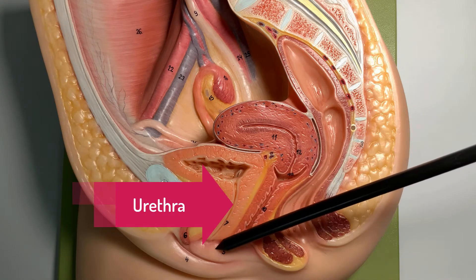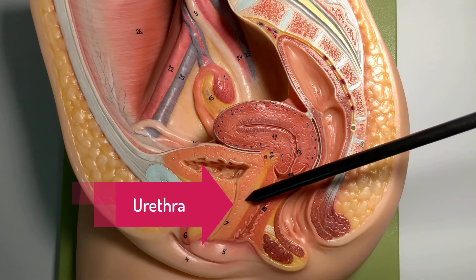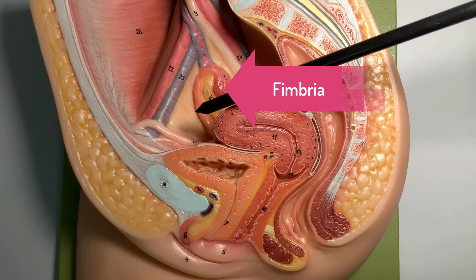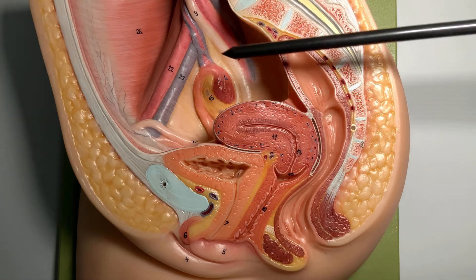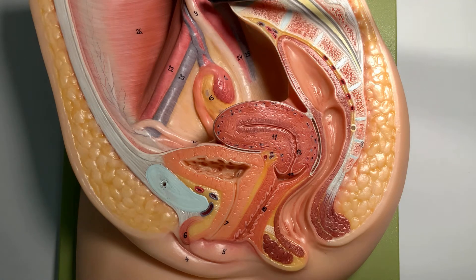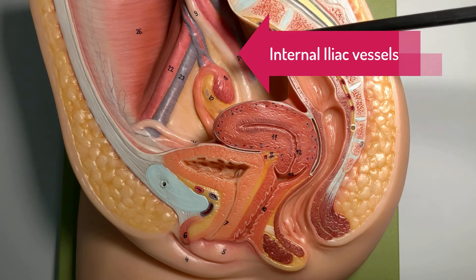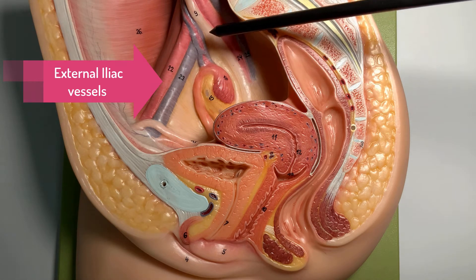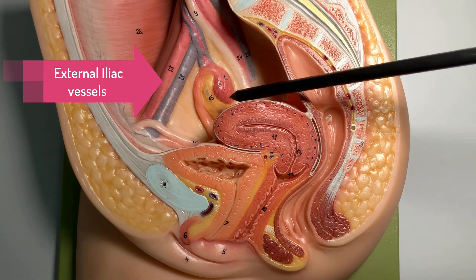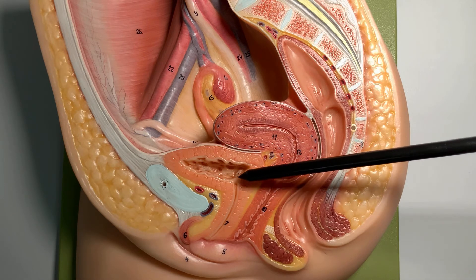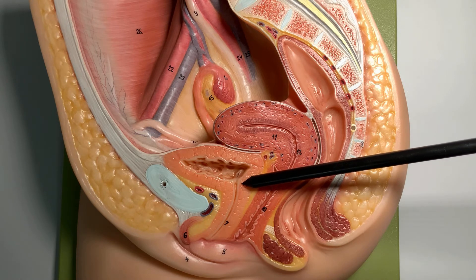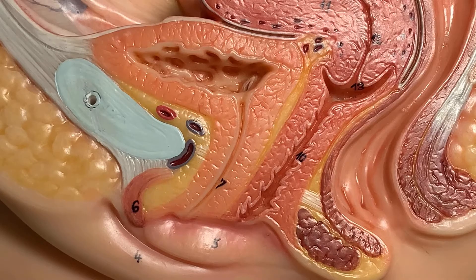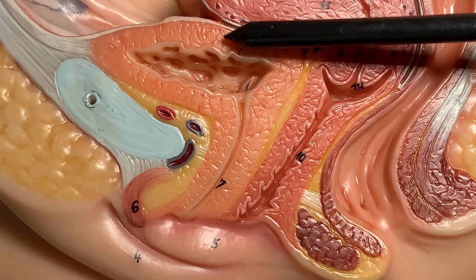This whole length is the female urethra, which opens in the vulva. Further we can see the fallopian tube and one part of it — the fimbria. Here we can see the common iliac vessels, the internal iliac vessel, and the external iliac vessel. You can also see the ureter approaching the bladder. Our discussion today is about the female urethra.